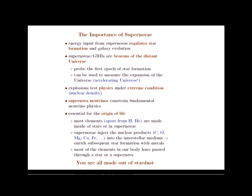Now the last thought I want to leave you with is they're also essential for the origin of life. Most of the elements, apart from hydrogen and helium, which are produced in the big bang, are made either inside of stars or in supernovae. So the supernovae provide a means by which these elements, carbon, oxygen, magnesium, calcium, and iron, are then injected back into the interstellar medium, which then enriches the next generation of star formation with metals, out of which later on planets like the Earth can form, and ultimately life. In fact, most of the elements, apart from hydrogen, in our bodies, must have passed through a star or a supernova. So the last thought I want you to leave with is that you're all made out of stardust. Thank you.